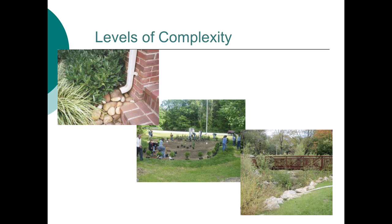As retrofits get larger, like the bioretention area in the middle, they often get more complex to design and more expensive, but generally provide more stormwater treatment as well. The largest and most complex retrofits, like stream restoration or constructed wetlands, often provide excellent water quality benefits and may even do it for a very low unit cost, but the total cost and the complicated design can make them more difficult to implement.